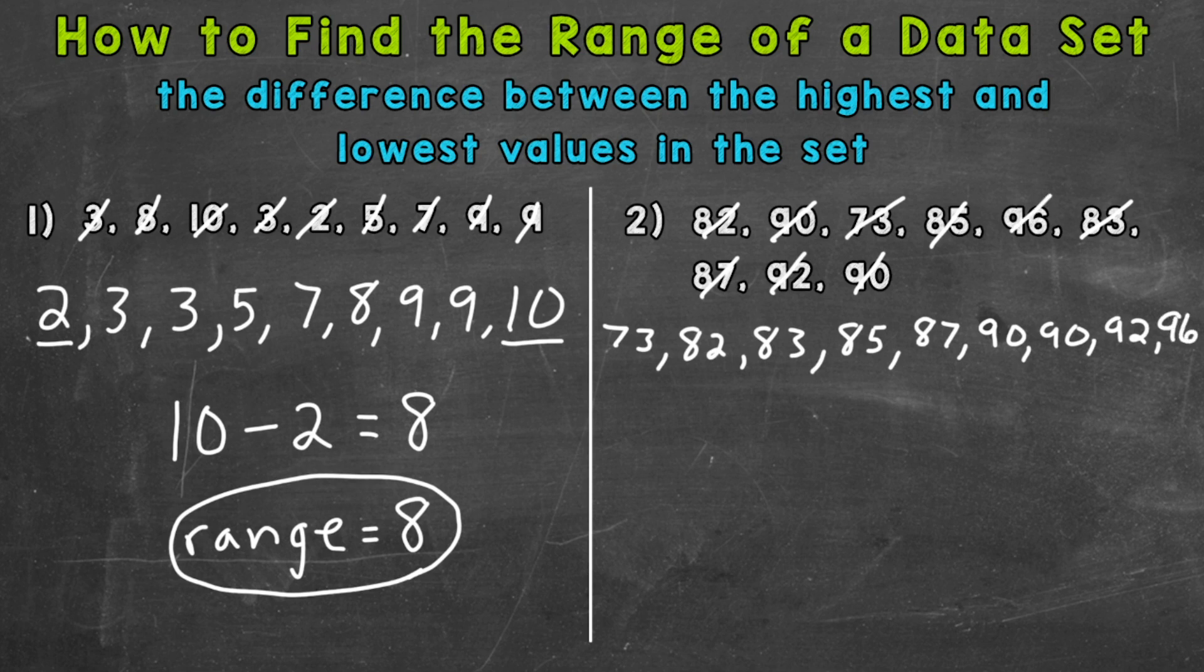So we take the difference between the highest and lowest values in that set to get the range. Our highest is 96 and our lowest is 73, so we need to do 96 minus 73. That will give us our range: 96 minus 73 equals 23, so our range is 23.